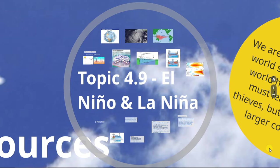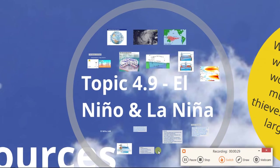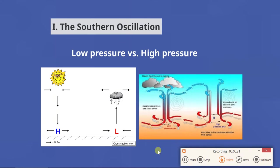Today we're talking about El Niño and La Niña. First, before we talk about that, sometimes El Niño and La Niña — well El Niño specifically — is referred to as the Southern Oscillation. You may see that term pop up, and a lot of times we call it ENSO, which stands for El Niño Southern Oscillation.